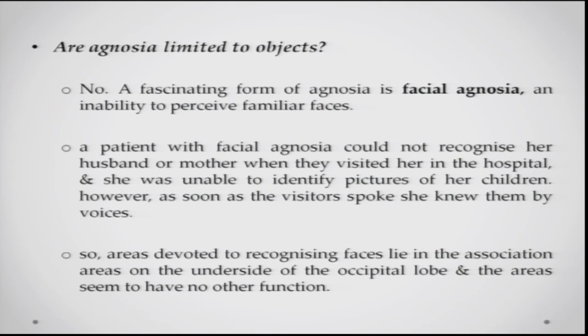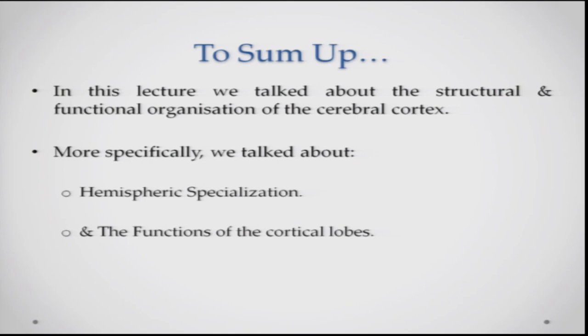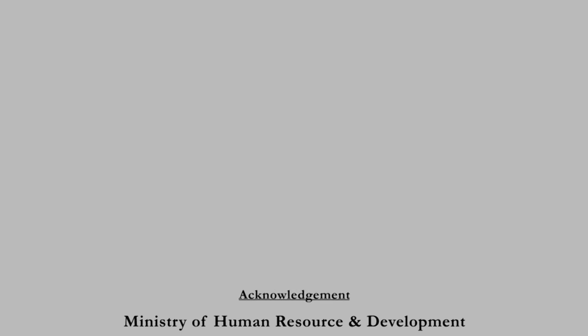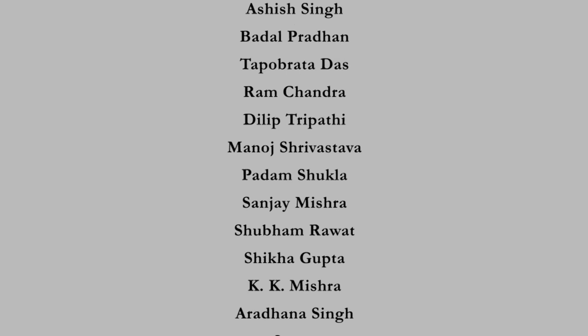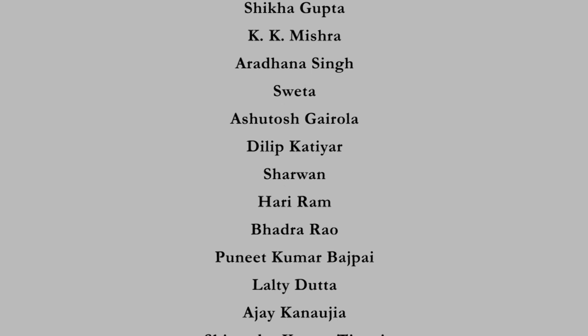To sum up, in this lecture we have talked about the structural and functional organization of the cerebral cortex, hemispheric specialization, and the structural and functional details of the cortical lobes. Thank you.